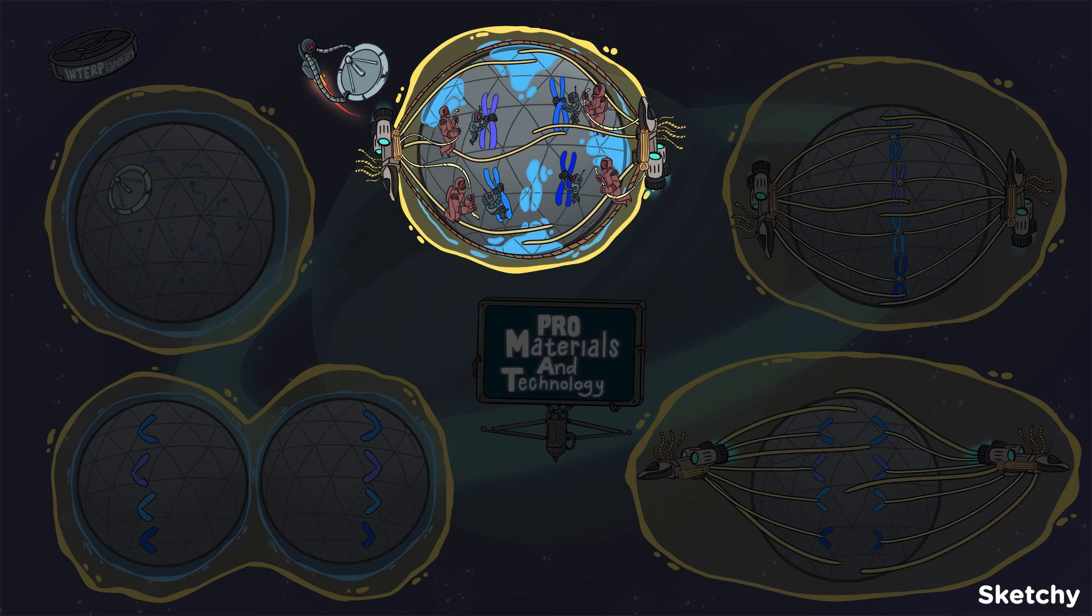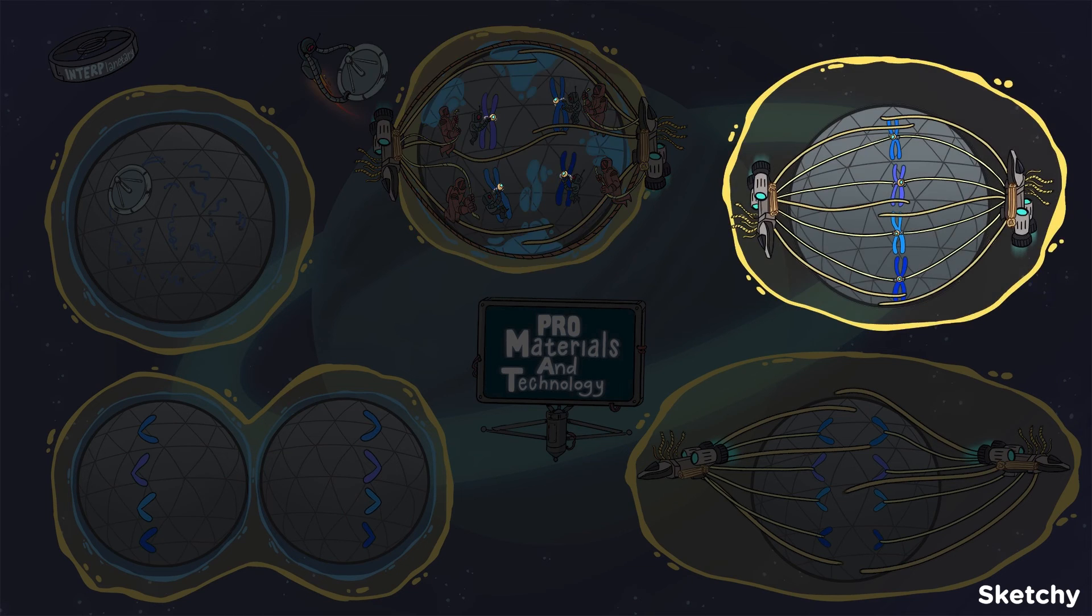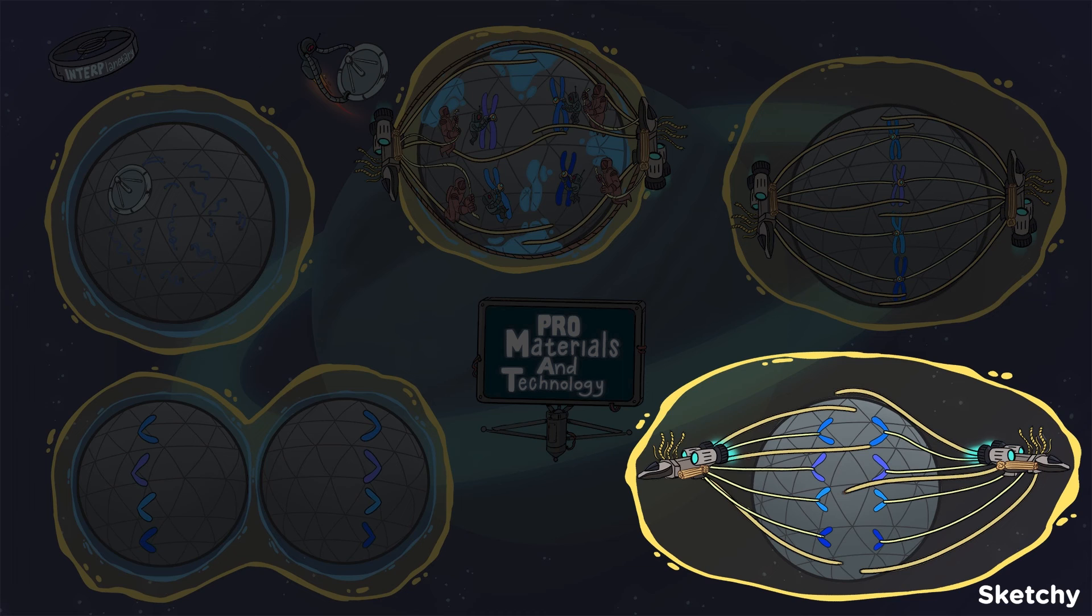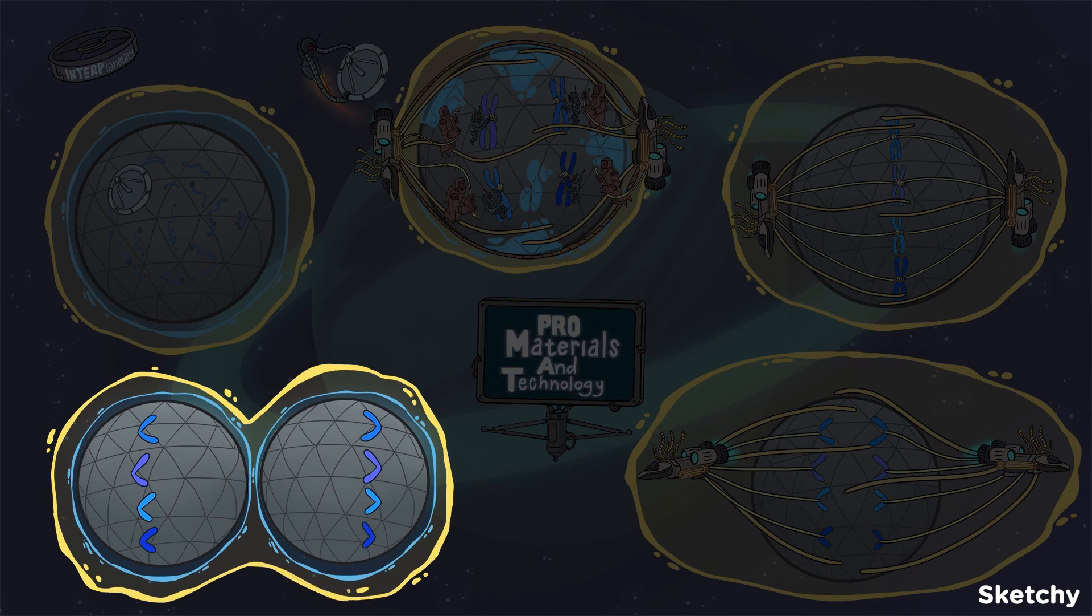In prophase, chromatin condenses into sister chromatids. The nuclear envelope starts breaking down, the nucleolus disappears, and the spindle apparatus begins the assembly process. In metaphase, the sister chromatids line up along the metaphase plate. In anaphase, the sister chromatids are pulled apart. In telophase, the spindle fibers go away and the nuclear envelope reappears before the parent cell fully splits into two daughter cells by cytokinesis.